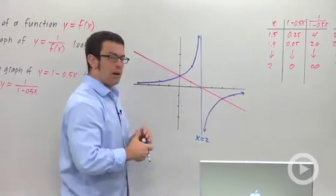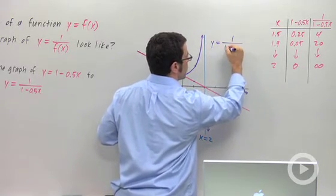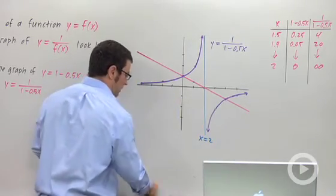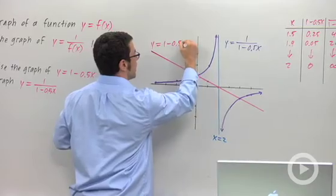So this purple graph is a graph of my reciprocal function, y equals 1 over 1 minus 0.5x. And the red graph is a graph of my original line, y equals 1 minus 0.5x.